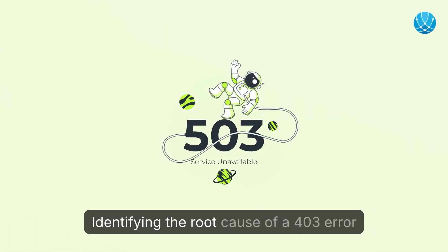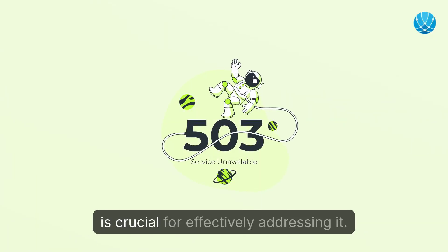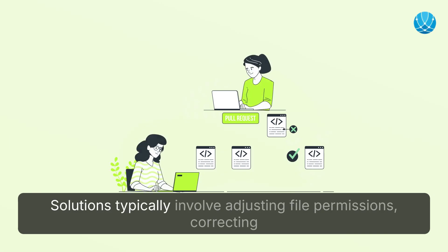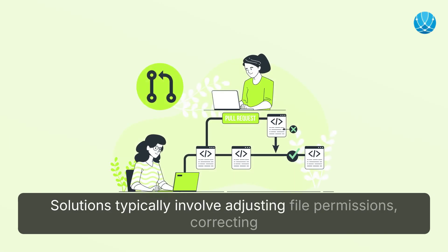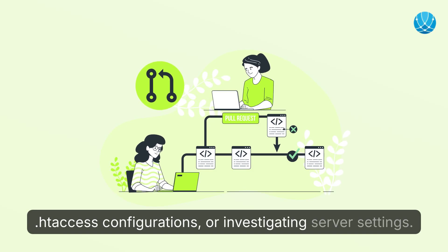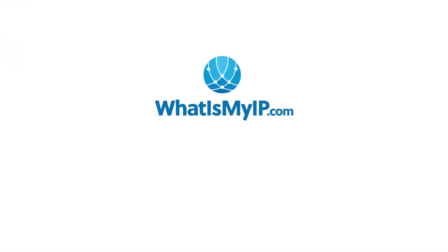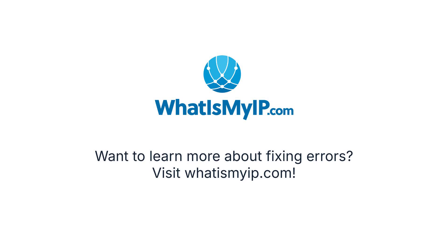Identifying the root cause of a 403 error is crucial for effectively addressing it. Solutions typically involve adjusting file permissions, correcting .htaccess configurations, or investigating server settings. Want to learn more about fixing errors? Visit whatismyip.com.